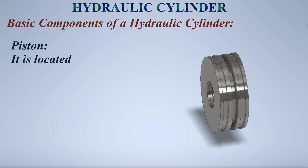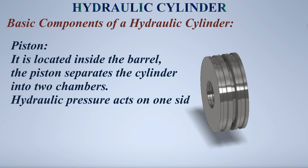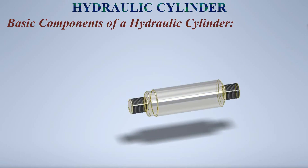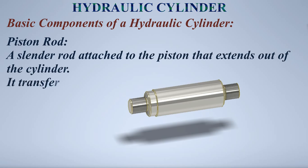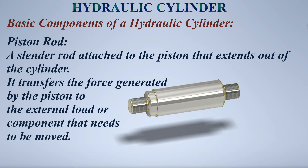Piston: located inside the barrel, the piston separates the cylinder into two chambers. Hydraulic pressure acts on one side of the piston, causing it to move and, in turn, move the piston rod. Piston rod: a slender rod attached to the piston that extends out of the cylinder, transferring the force generated by the piston to the external load or component that needs to be moved.